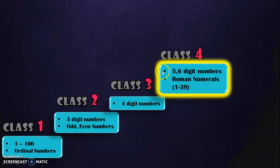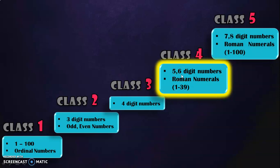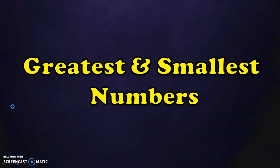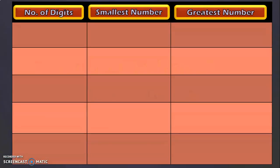Now that we are in class 4, we are going to deal completely with 5 and 6 digit numbers and also learn Roman numerals from 1 to 39. 5 and 6 digit numbers are called large numbers. And when you go into class 5, we will be dealing with 7 and 8 digit numbers and also learn Roman numerals from 1 to 100. Now let us write down the greatest and smallest numbers in each type of digits.